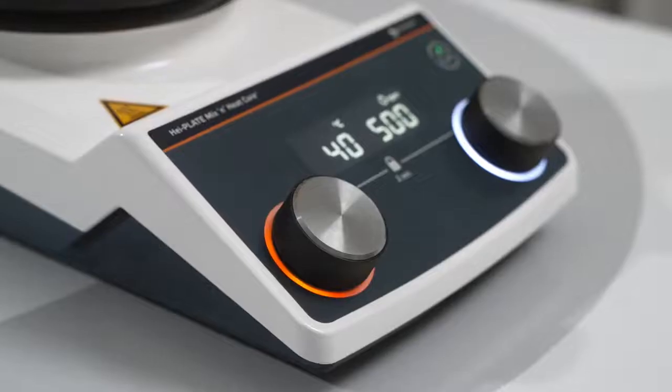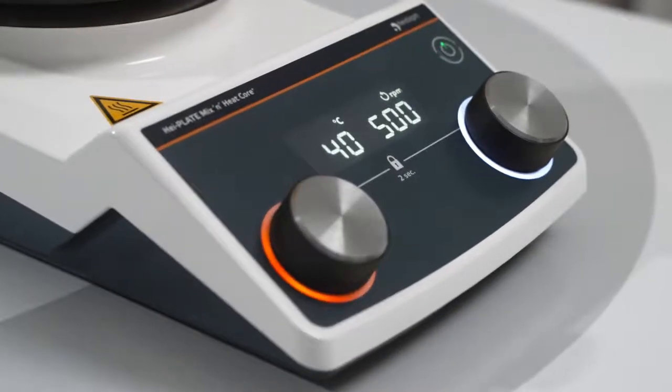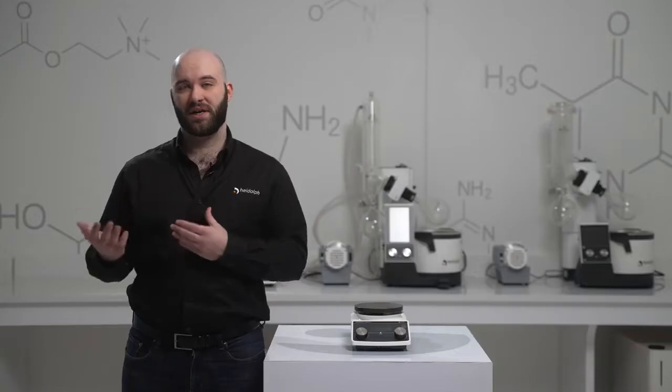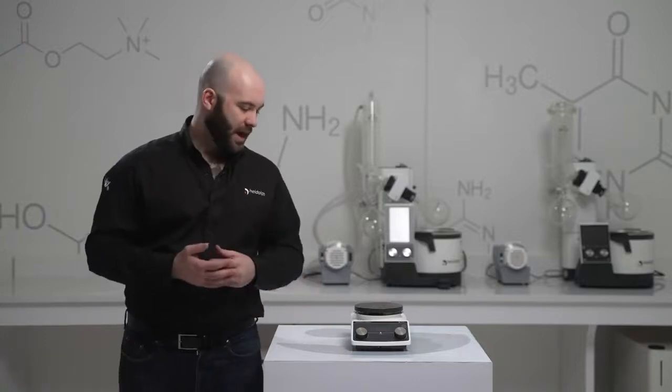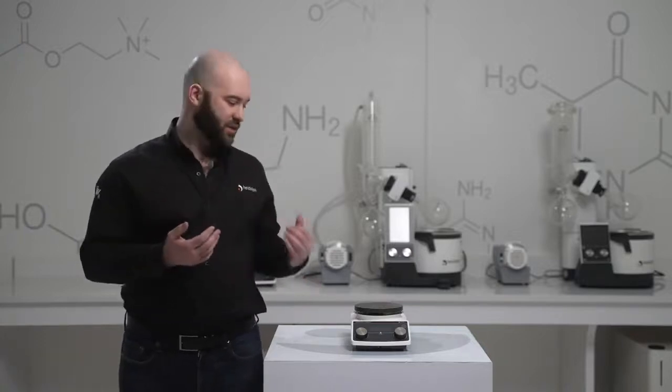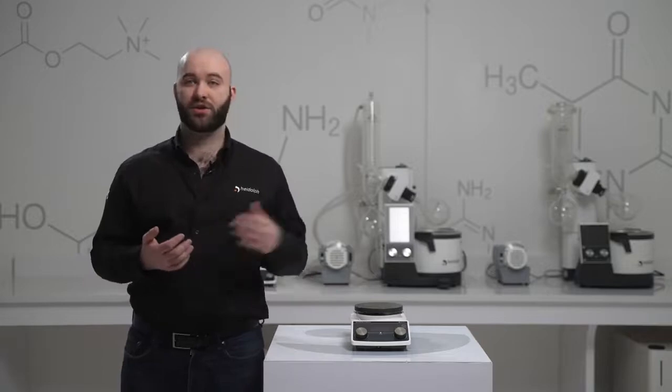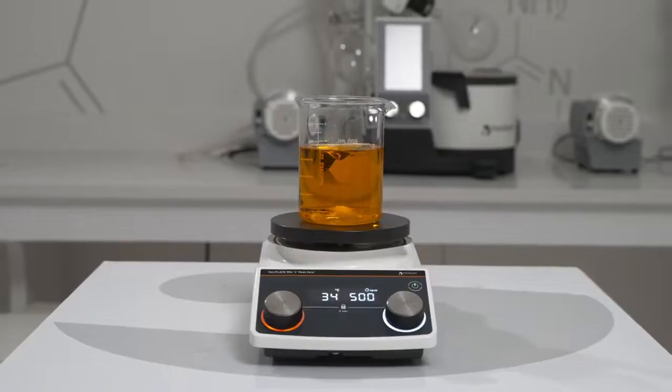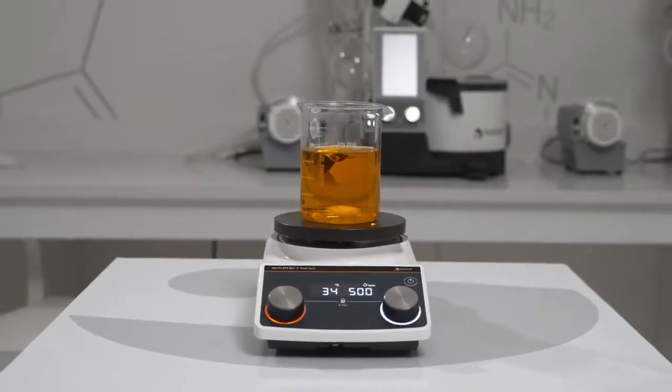Both buttons have illuminations below them so from afar you can see whether or not your hotplate is heating or mixing. The HEI-PLATE Core Plus continues to use the PT-1000 thanks to the digital nature of the hotplate, so from your screen you can see what your process temperature is.